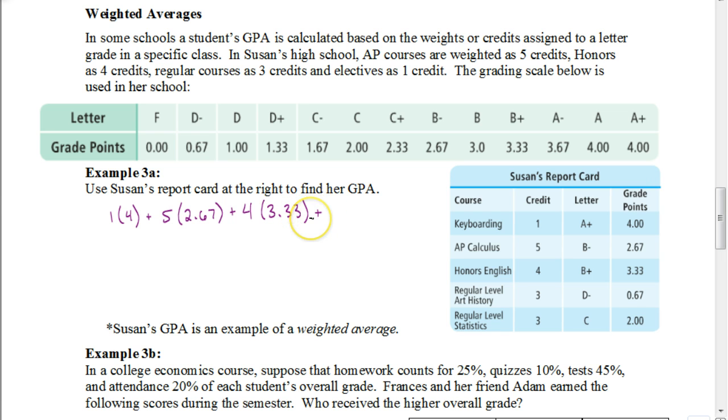And the next one is regular level art history, which has a weight of three. She got a D minus in there, which is a GPA of point six seven. And lastly, in regular level statistics, that's given a weight of three. And she earned a grade point of two for that.